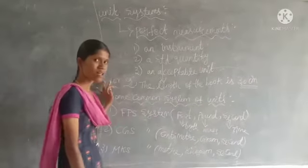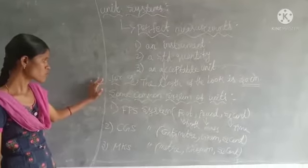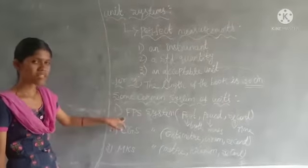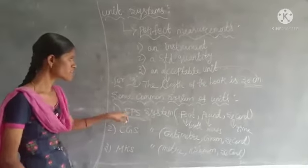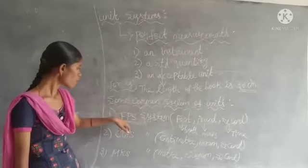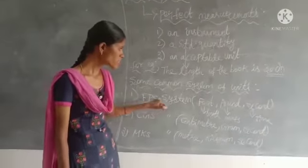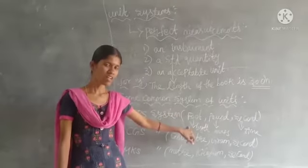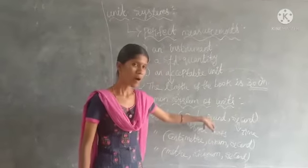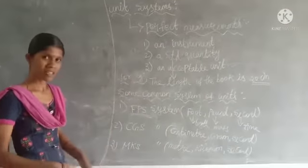The next topic is common systems of units — there are different types. The first is the FPS system: F stands for foot, P stands for pound, and S stands for second. So for the quantity of length, the unit is foot; for mass, the unit is pound; and for time, the unit is second. The second system is the CGS system: C stands for centimeter, G stands for gram, and S stands for second. Centimeter is for length, gram is for mass, and second is for time.